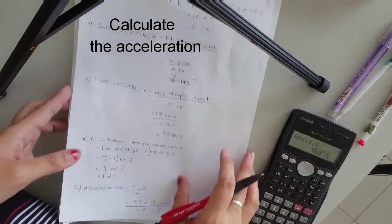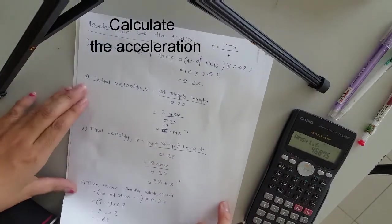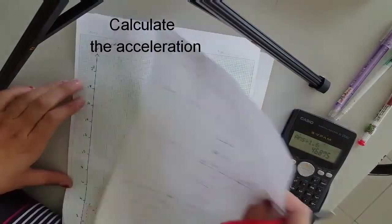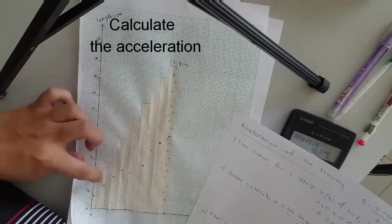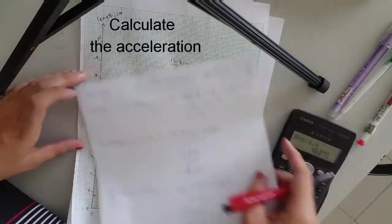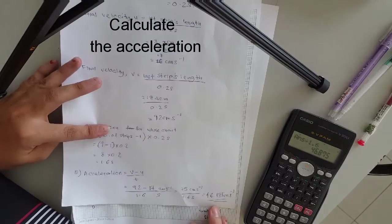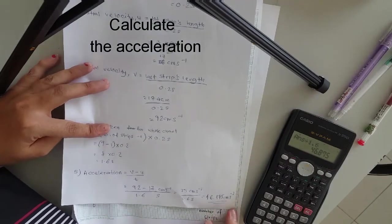So I hope you guys can actually do this working. So this is acceleration for the trolley, which is for the whole entire chart. So from here to here, the trolley's acceleration is 46.875 centimeter per second.